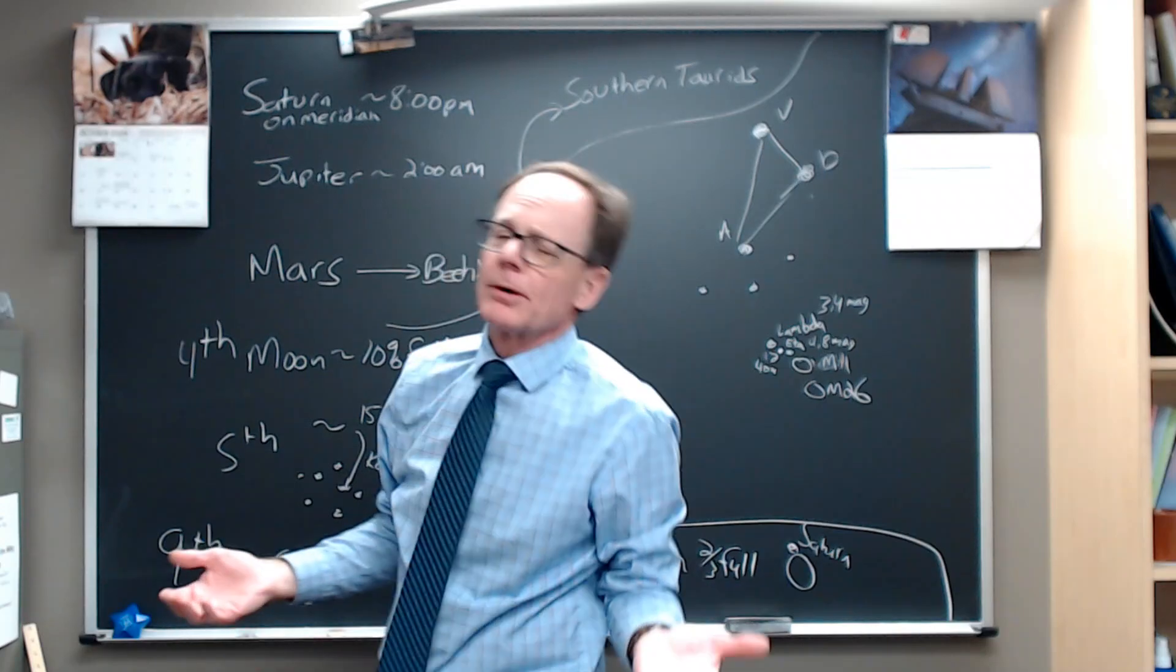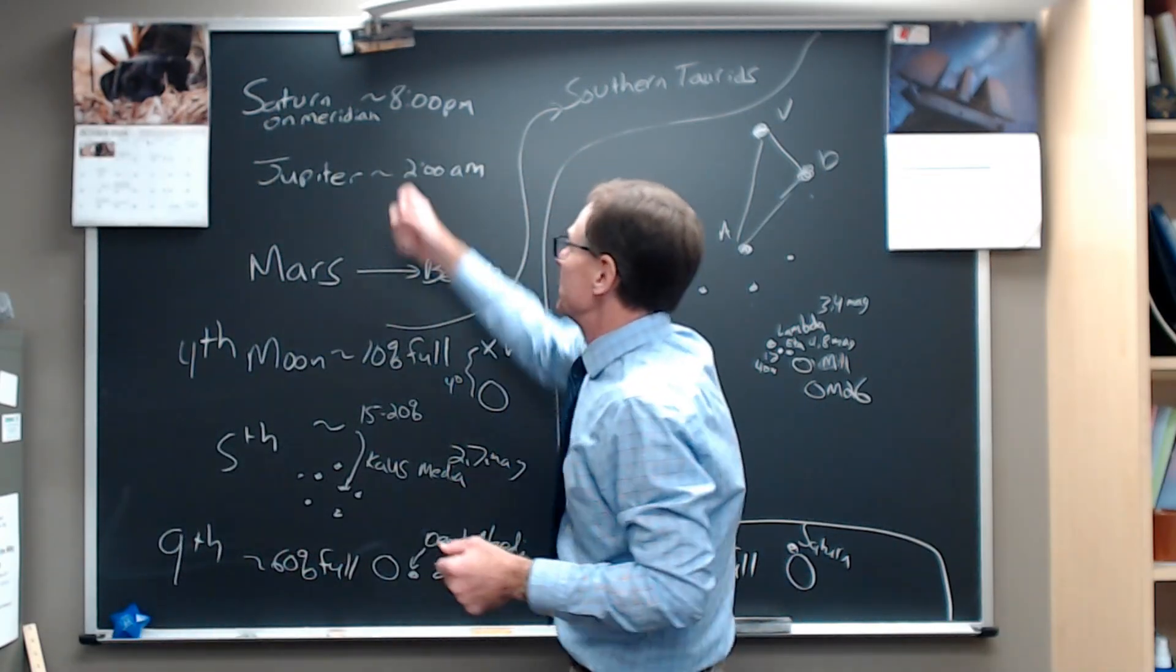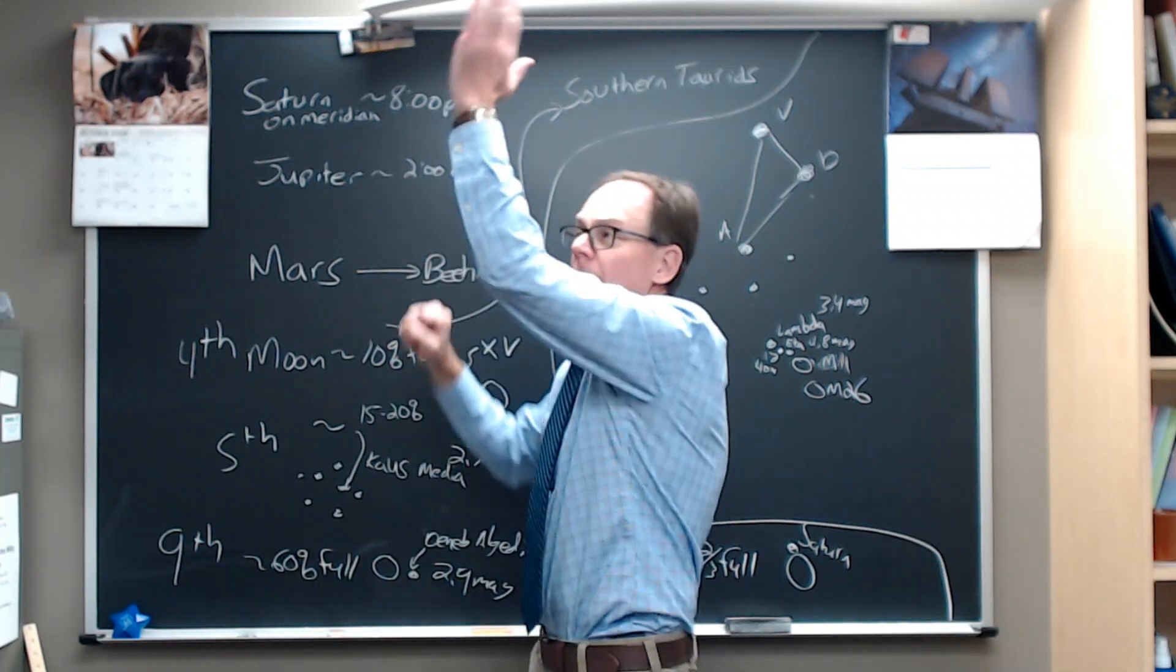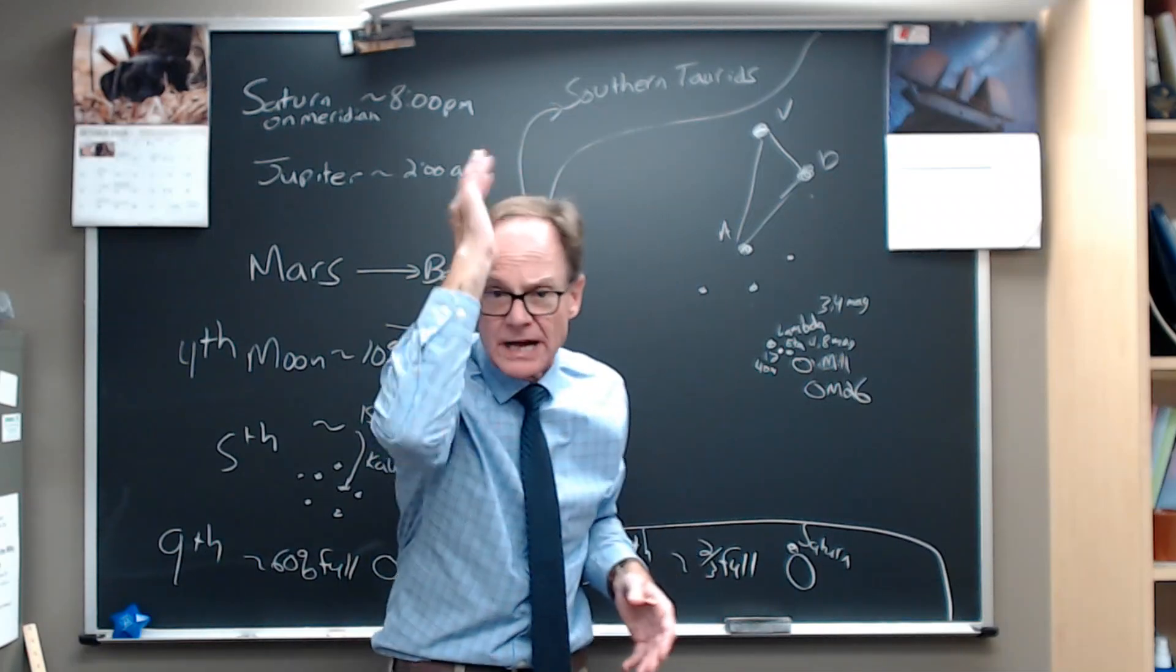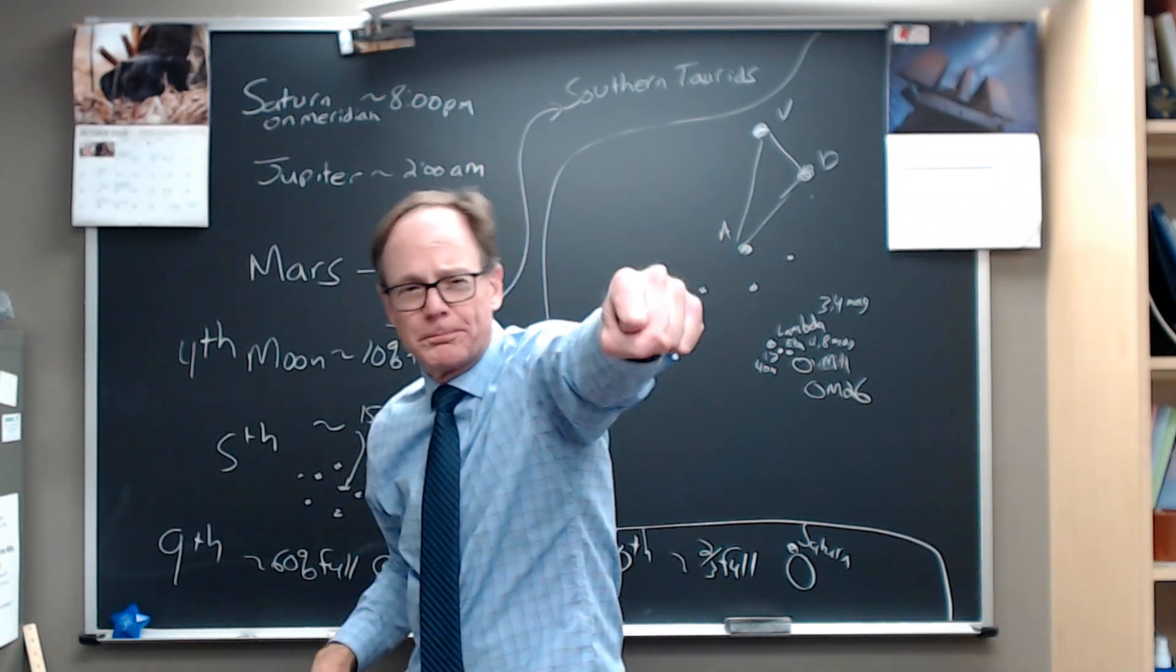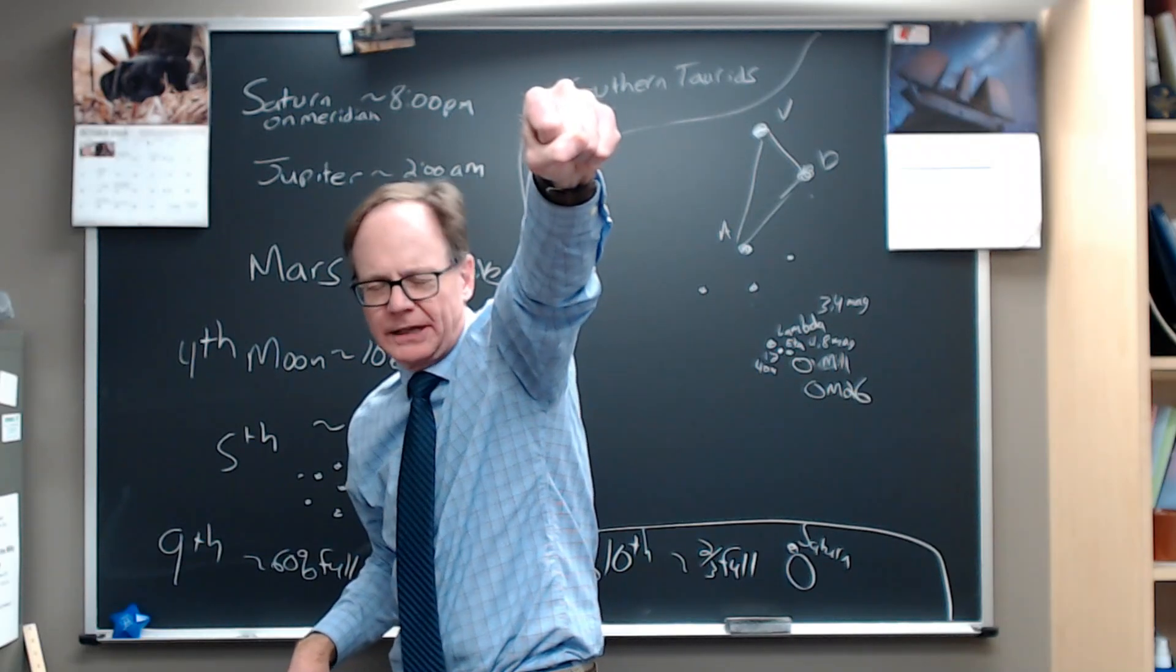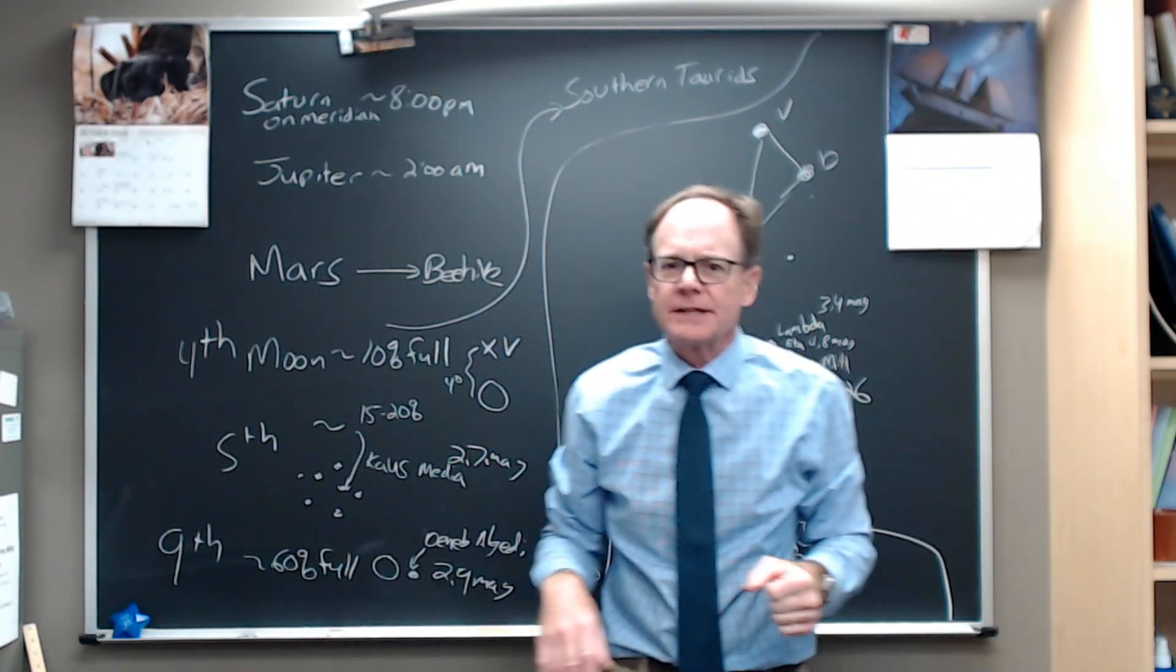Jupiter will be on the meridian at about 2 a.m. What that means is when you're looking at Saturn on that north-south line, looking due south, if you live north, looking due south to see Saturn there, then Jupiter will be the big, bright, whitish object that's rising in the east. So you see Jupiter coming up. You've got Jupiter and Saturn in the sky there together.